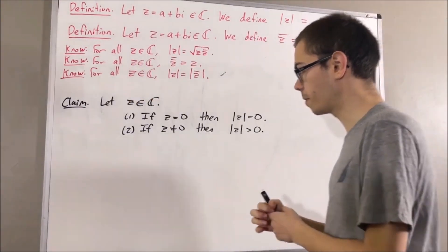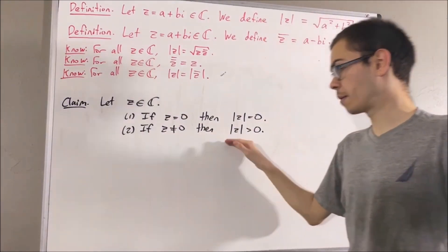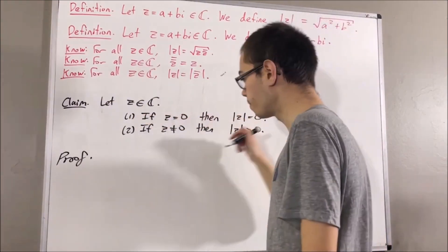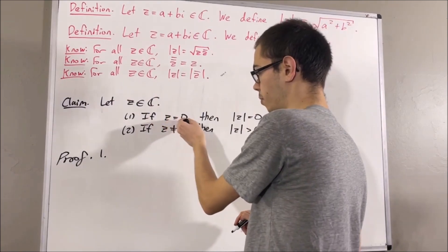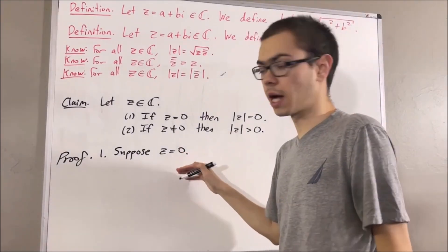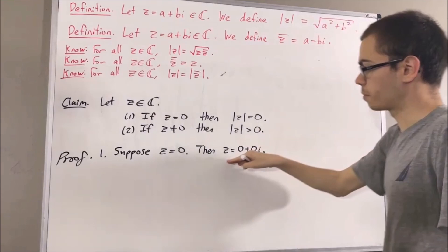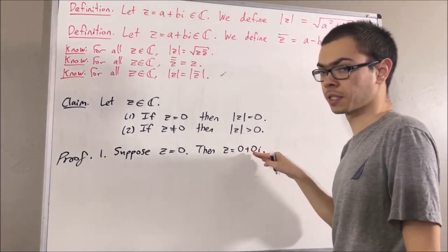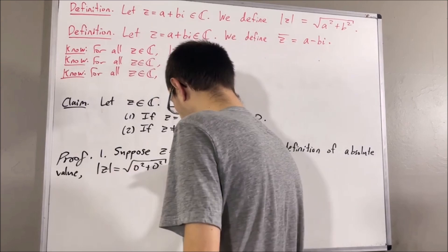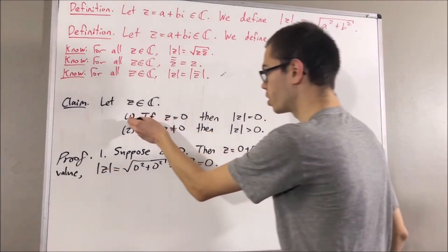The next fact to prove: let z be a complex number. If z equals zero then the absolute value of z equals zero; if z is not equal to zero then the absolute value of z is greater than zero. To prove the first part, suppose z equals zero. As a complex number this is zero plus zero i, so applying the definition of absolute value, the absolute value of z equals the square root of zero squared plus zero squared, which is just zero. So this proves part one.